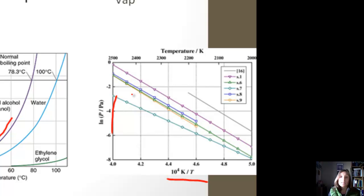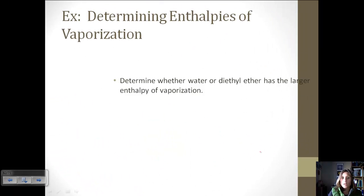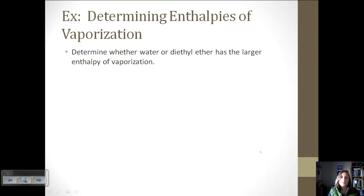Basically, since R is going to be the same for all of them, the line with the steepest slope is going to have the largest delta H of vaporization. Which relates to our example. If you wanted to determine whether water or diethyl ether had the larger enthalpy of vaporization, you would need to plot natural log of P versus one over T. And then, whichever one had the largest slope, the steepest line, that's going to be the one with the largest heat of vaporization.